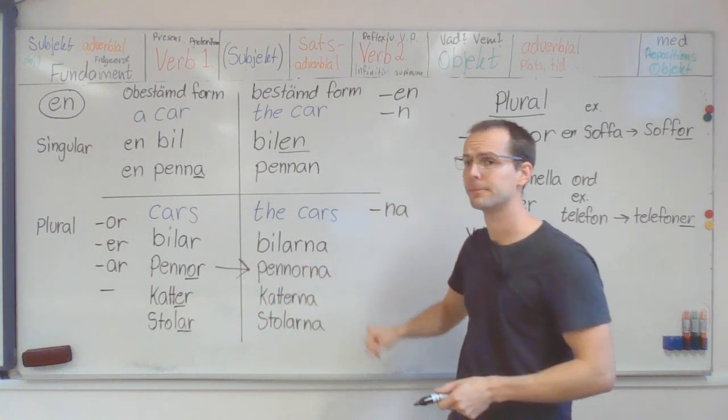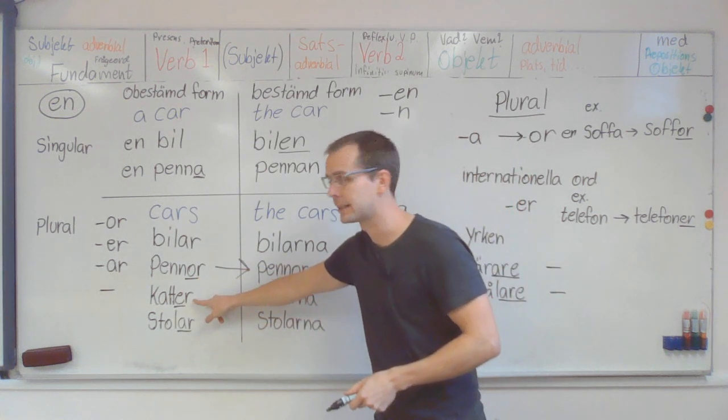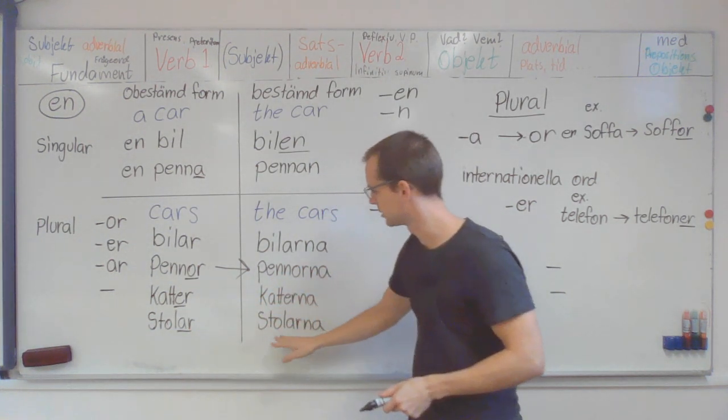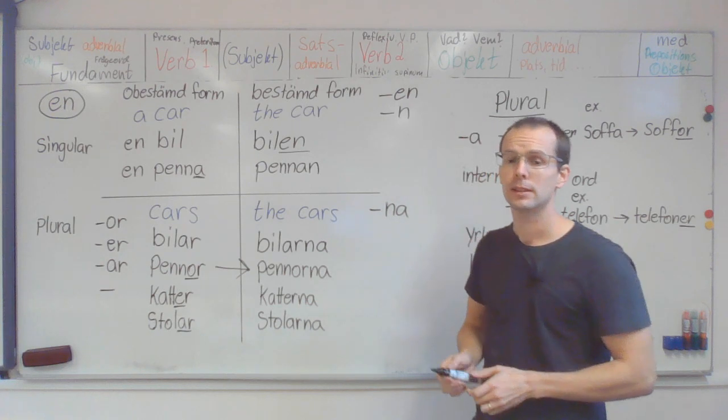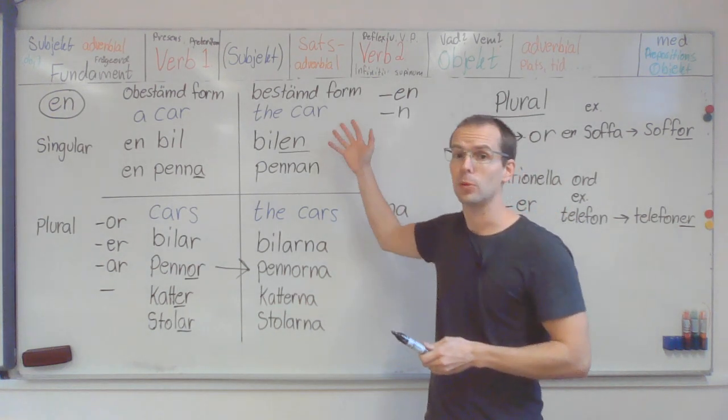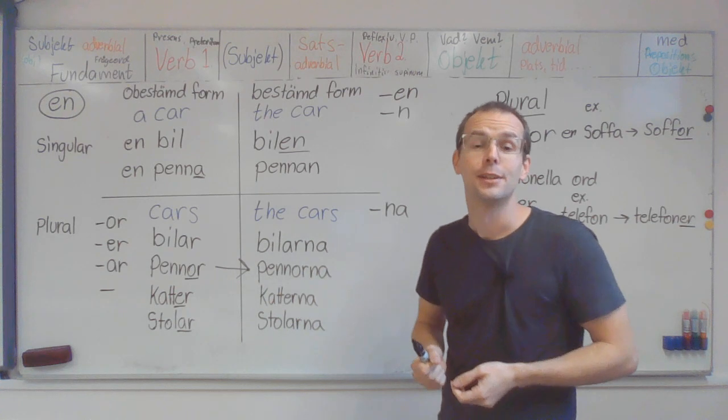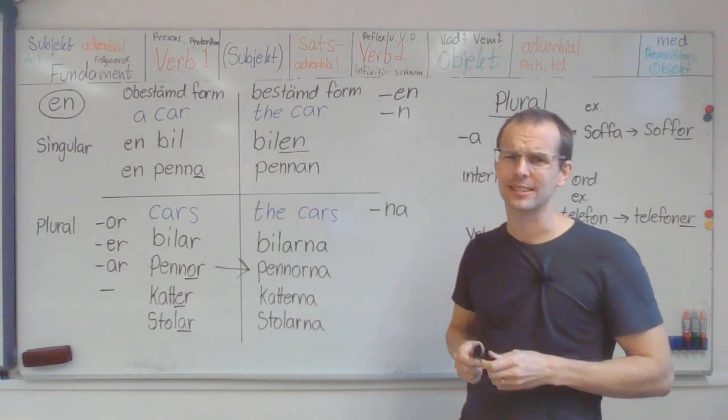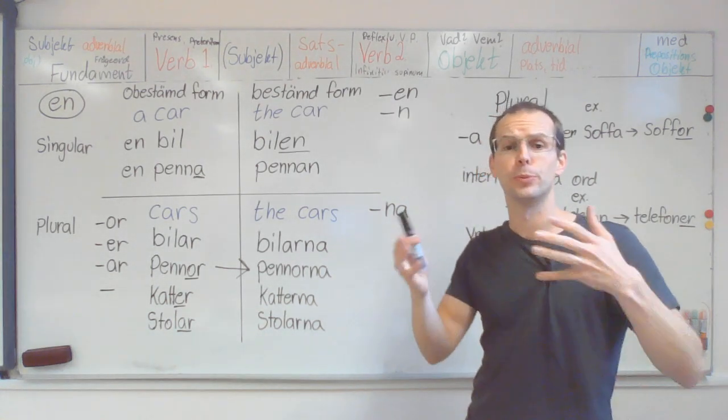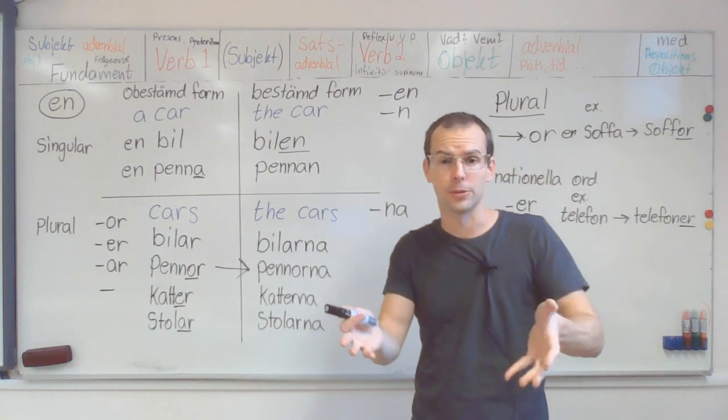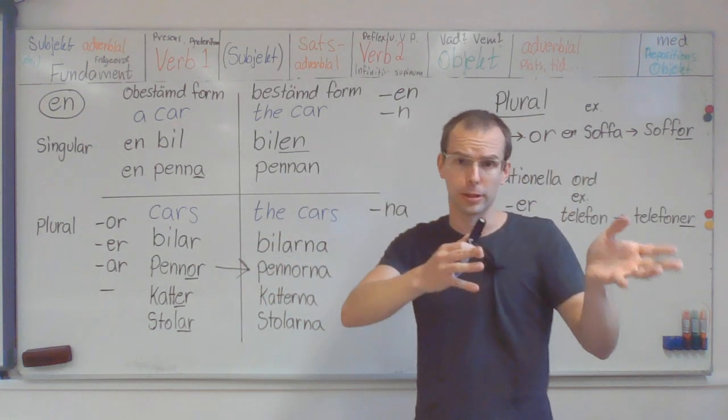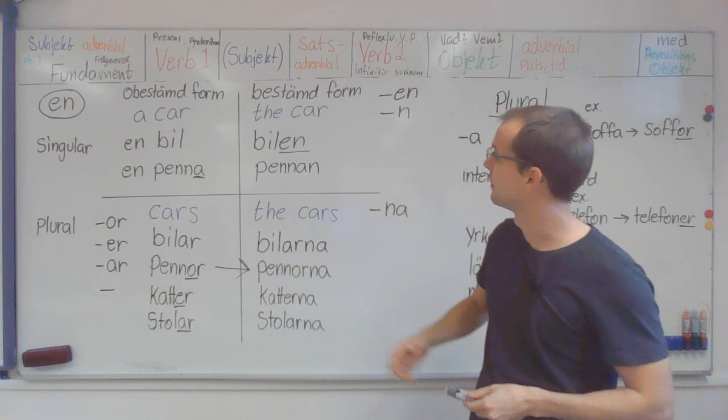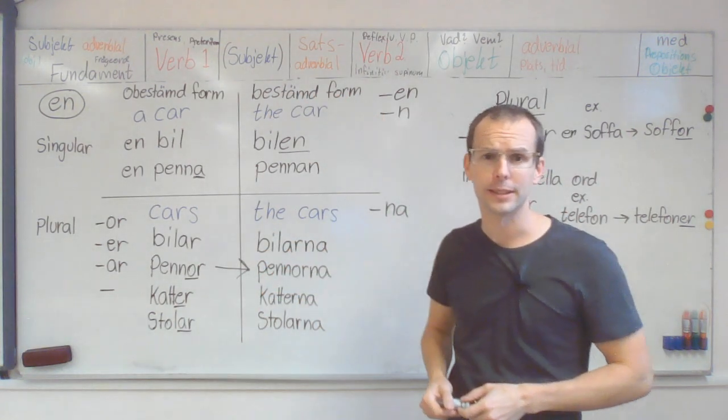Pennor. Pennorna. Katter. Katterna. And stolar. Stolarna. So, this is how we do it in Swedish, which is a bit more difficult than English. English is fairly easy when we talk about nouns. Singular. Plural. In Swedish, a bit more difficult. But this is how we do it.